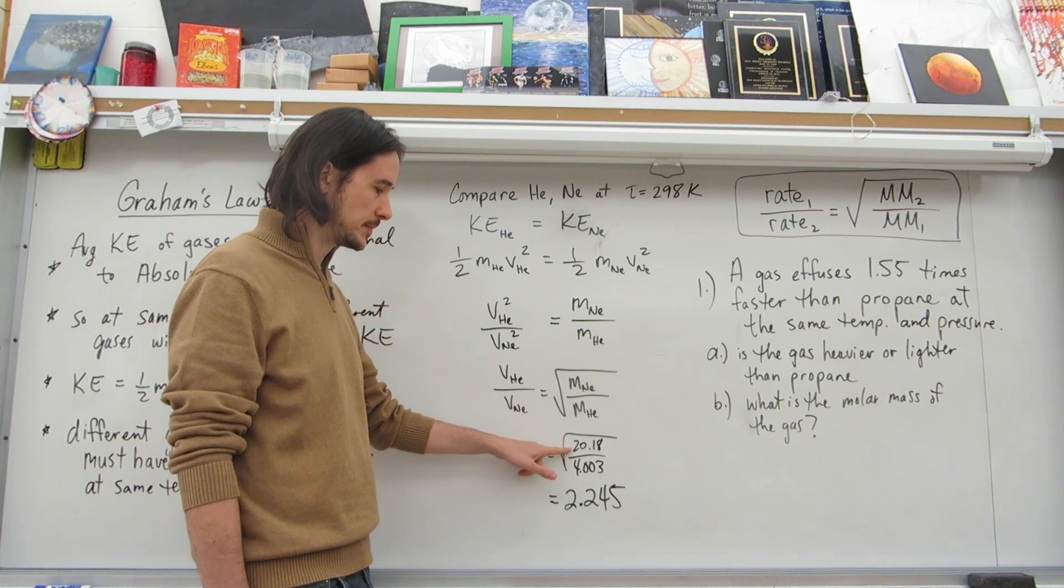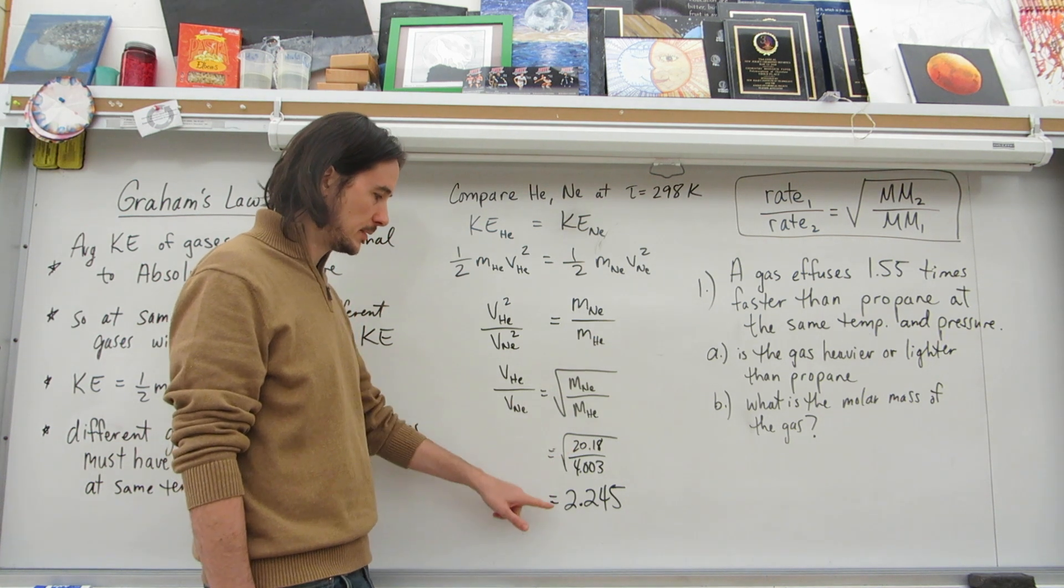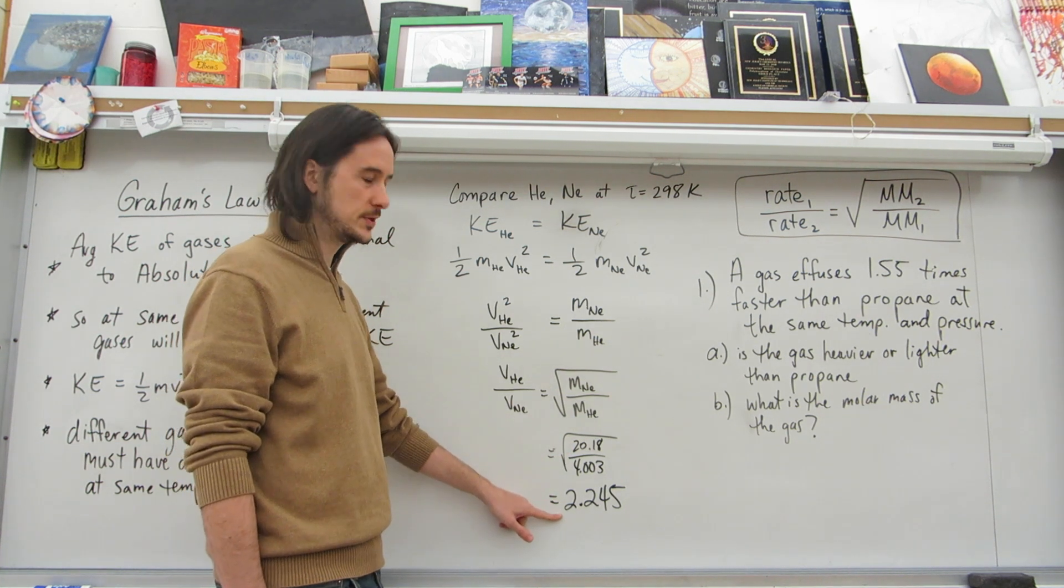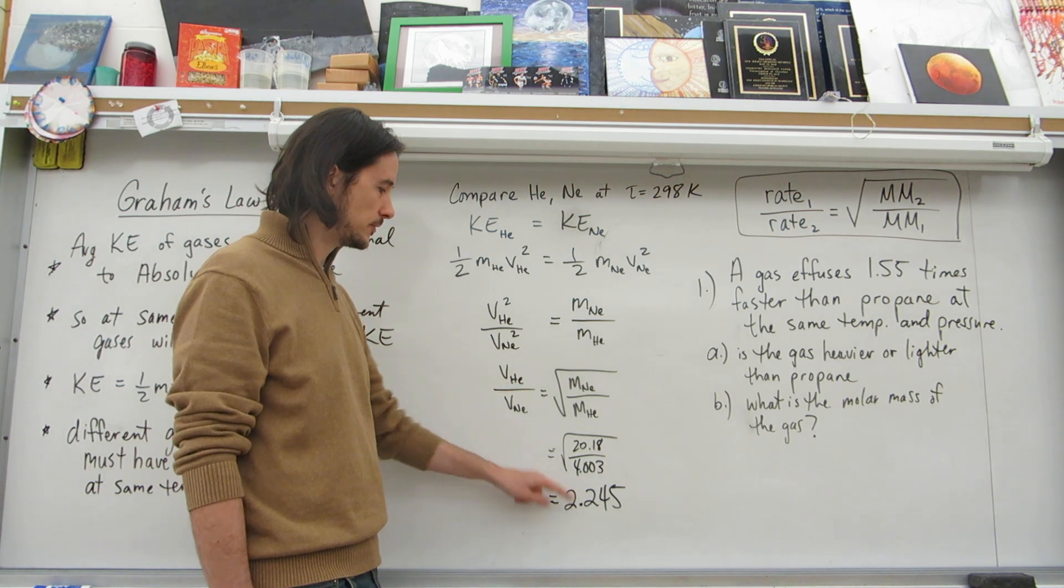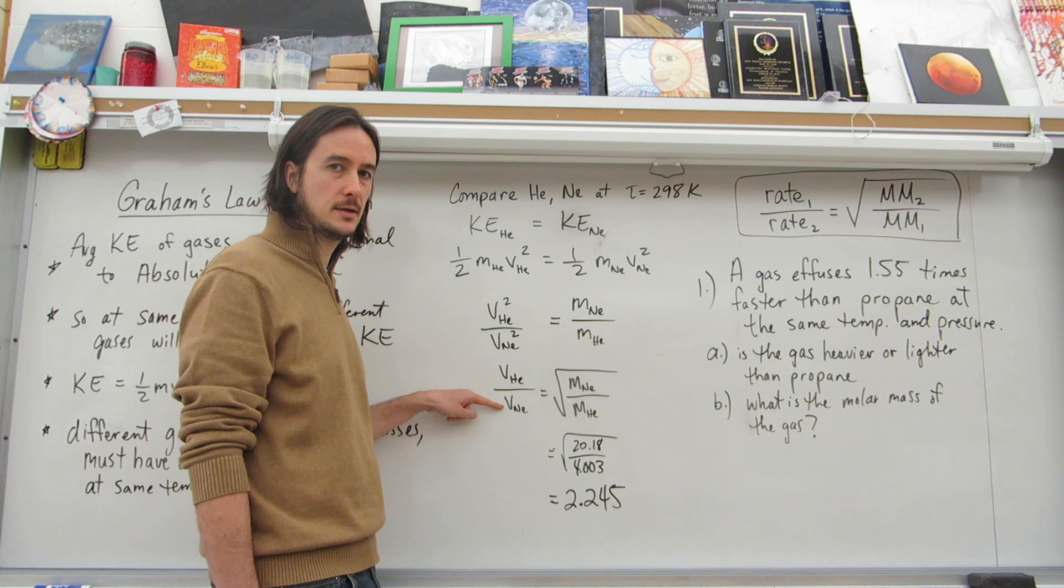We plug in the molar masses, 20.18. And we get 2.245. This means the rate of helium is 2.245 times faster than the rate of neon.